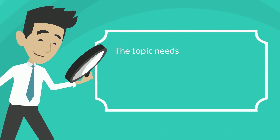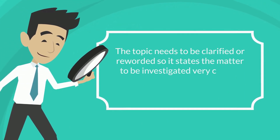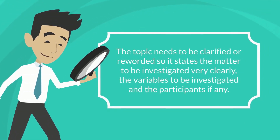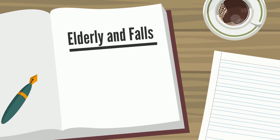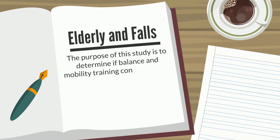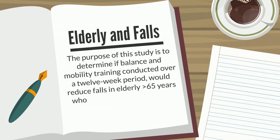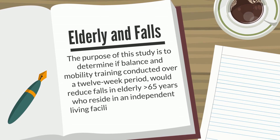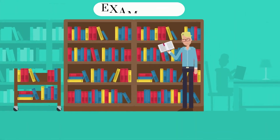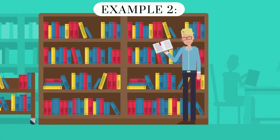Second, the topic needs to be clarified or reworded so it clearly states the matter to be investigated, the variables to be investigated, and the participants if any. The purpose of this study is to determine if balance and mobility training conducted over a 12-week period would reduce falls in elderly greater than 65 years who reside in an independent living facility in New York.